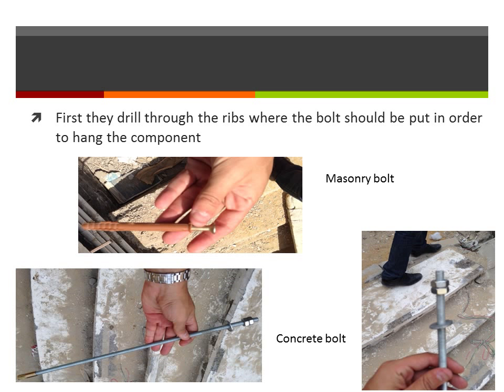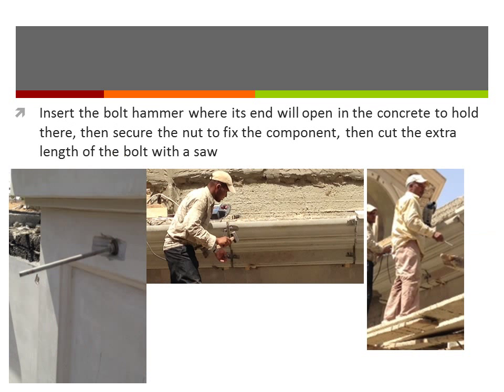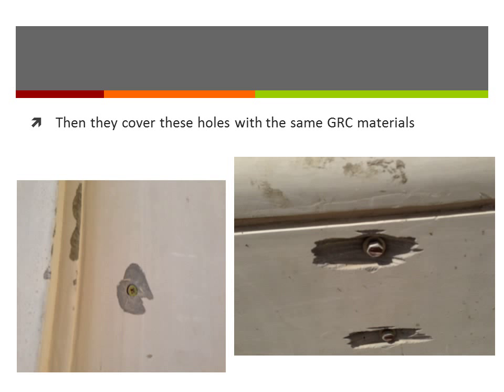To fix the GRC object to concrete, masonry bolts or concrete bolts are used. First, they drill through the ribs where the bolts should be placed. Then the bolt is inserted and hammered so its end opens in the concrete to hold it. The nut is secured to fix the component, and the extra bolt length is cut with a saw. Finally, the holes made by the bolts are covered using the same GRC materials.